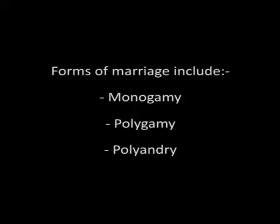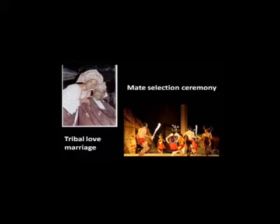In this unit we will explain the institution of marriage and various aspects connected with it. This will include discussion on forms of marriage such as monogamy, polygamy, and polyandry. We have also described mate selection as an important aspect of marriage, covering love marriages, preferential marriages, and mate selection practices among tribals. The last part deals with changes in marriage, its forms, mate selection practices, age at marriage, and so on.